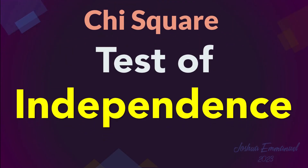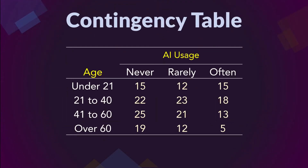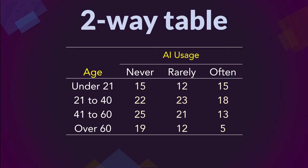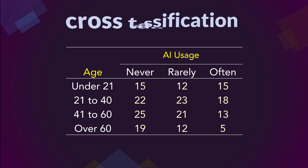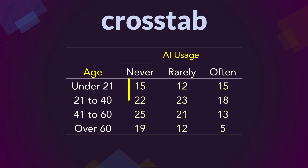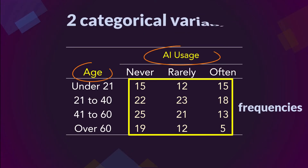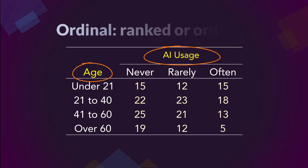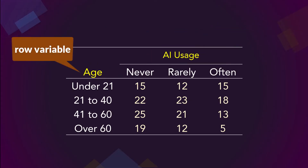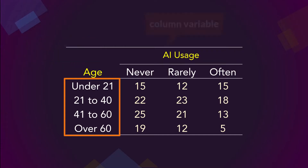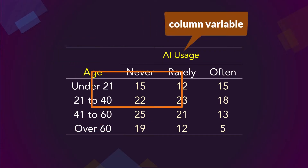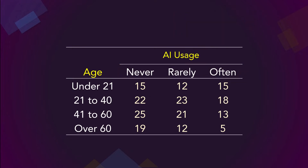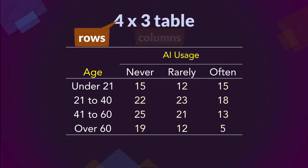Chi-square test of independence. This is a contingency table, also called a two-way table, cross-classification table, cross-tabulation, or just cross-tab. It shows the observed number of cases or frequencies for two categorical variables. By categorical, we mean nominal or ordinal. These variables here are ordinal since their categories can be ranked. The row variable is age category consisting of four categories, and the column variable is AI usage consisting of three categories. We refer to a table with this structure as a 4x3 contingency table because it has four rows and three columns.